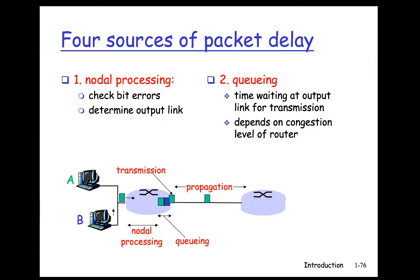Now, packet delay. There are four components. The first component is the nodal processing delay, but we just call it processing delay. It occurs right here when the packet arrives at the router. The router checks the bit errors in case there are any, and decides quickly which output link the packet should go out.